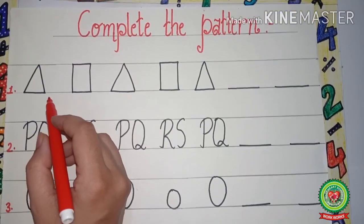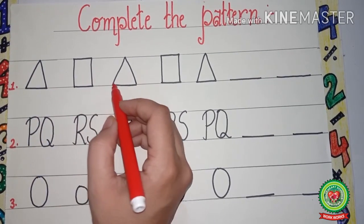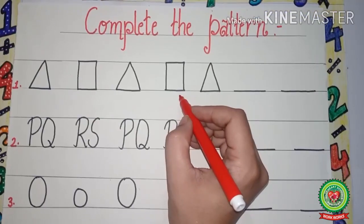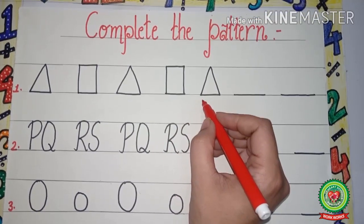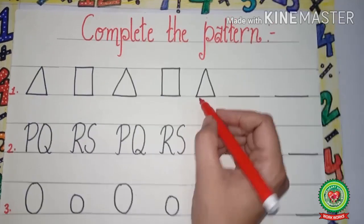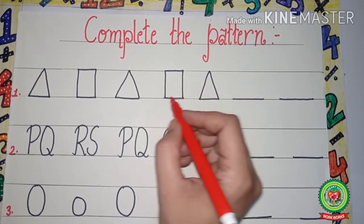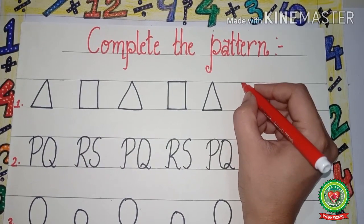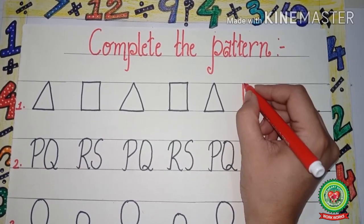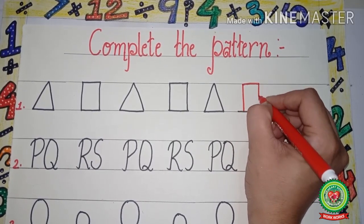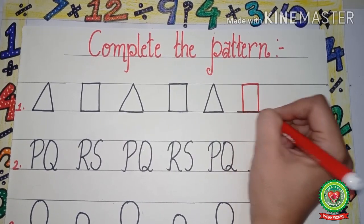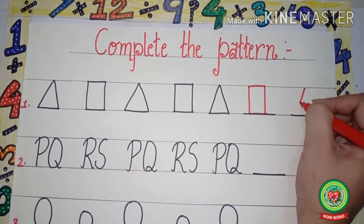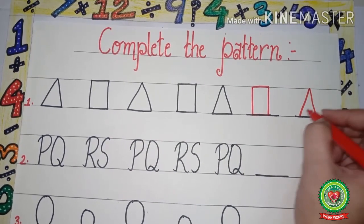Look very carefully — this is triangle, then after triangle a square, again triangle, square, triangle. Now we have to complete the pattern. We will see what will come after triangle — after triangle there is a square, so we will draw a square here. Now after square what comes — a triangle — so again we will draw a triangle here and complete the pattern.